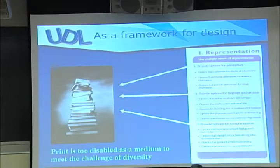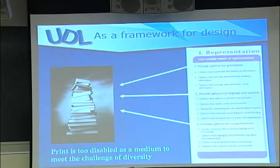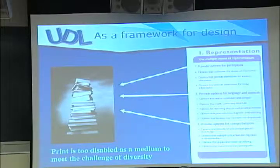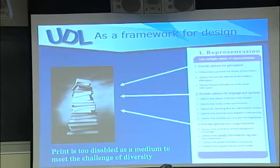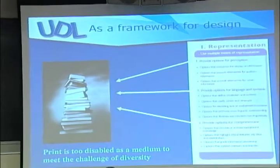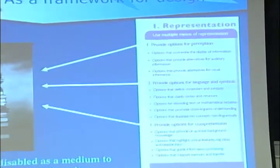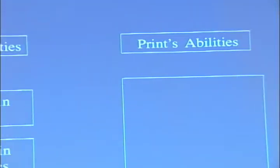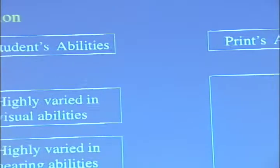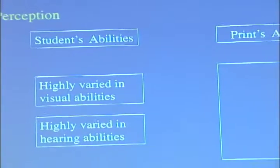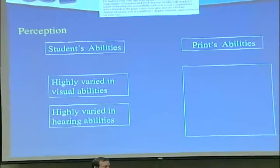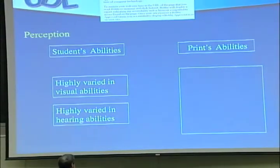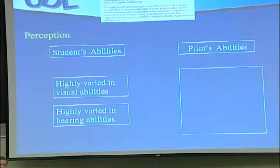So how do we create a reading environment where everybody has equal access to get to the meaning we want? We want kids comprehending. And what does that mean we should do? I realize I want to play through the metaphor we talked about yesterday — which is to say, we tend to focus on the kids and say they have disabilities.